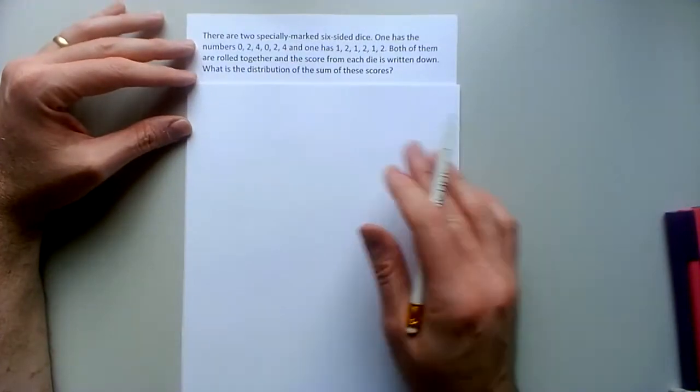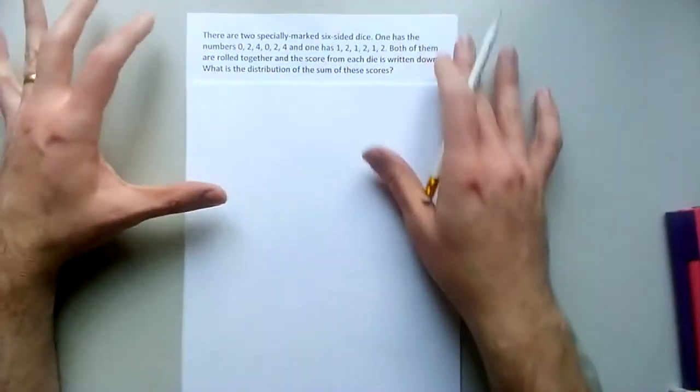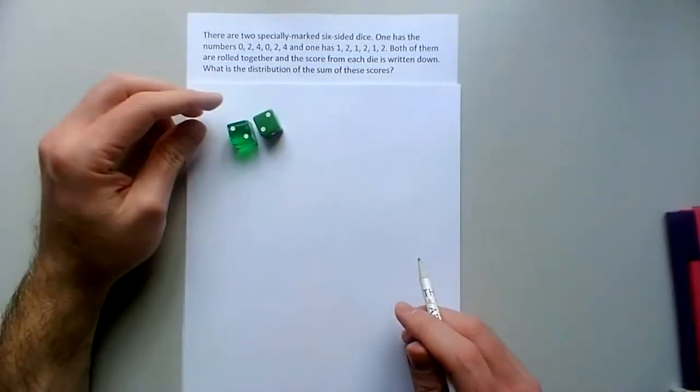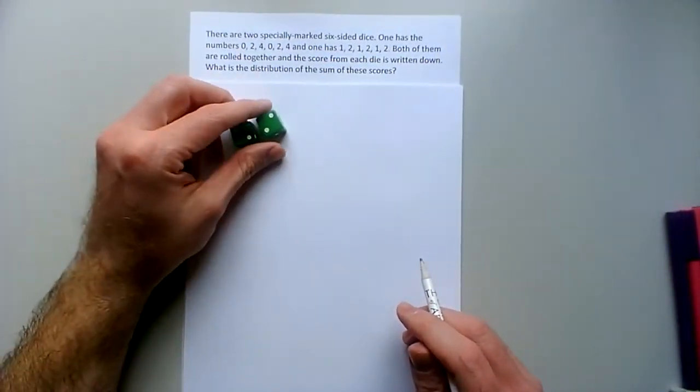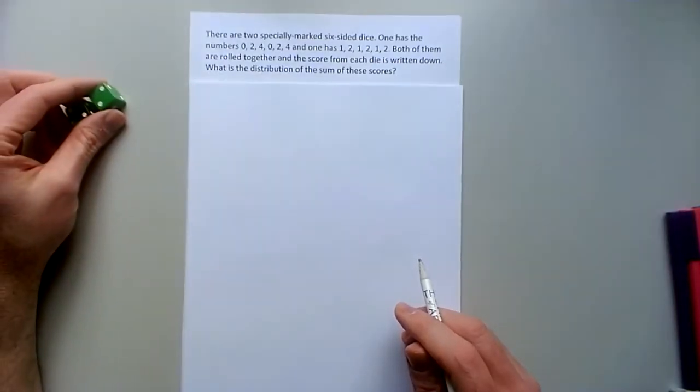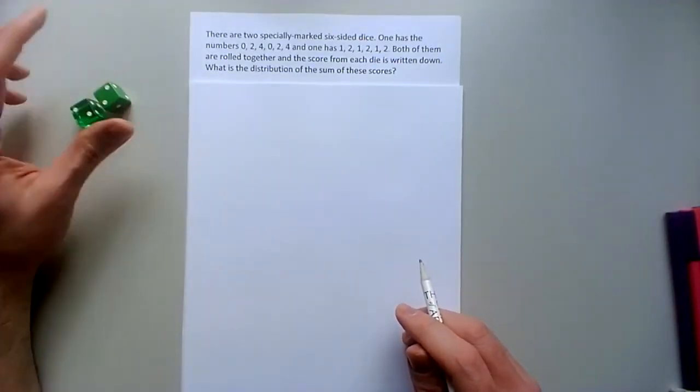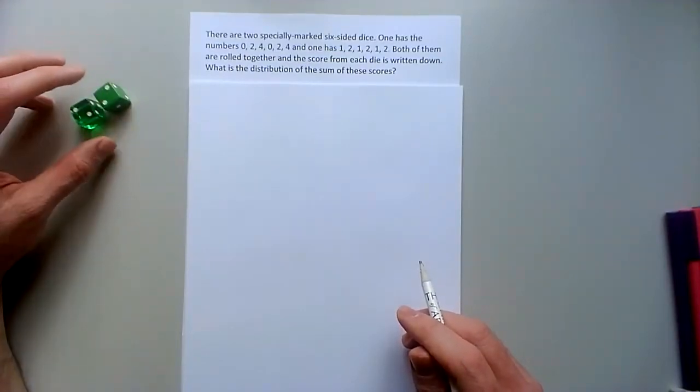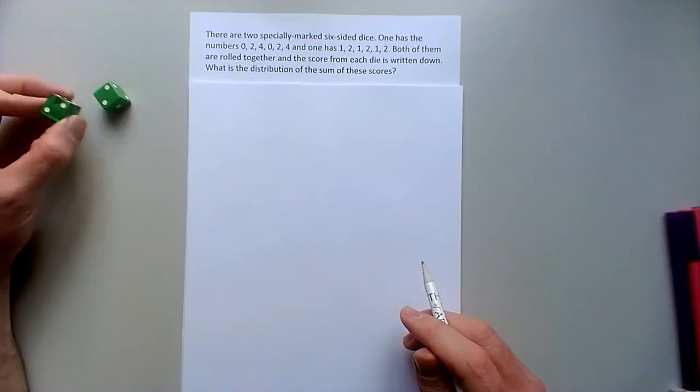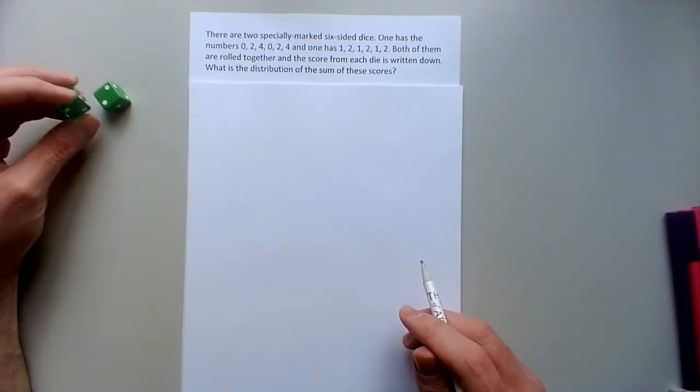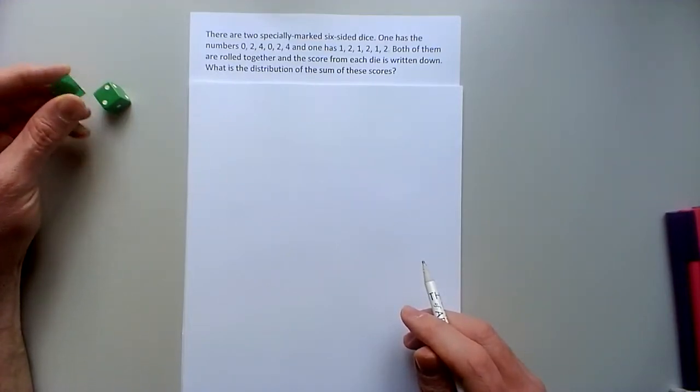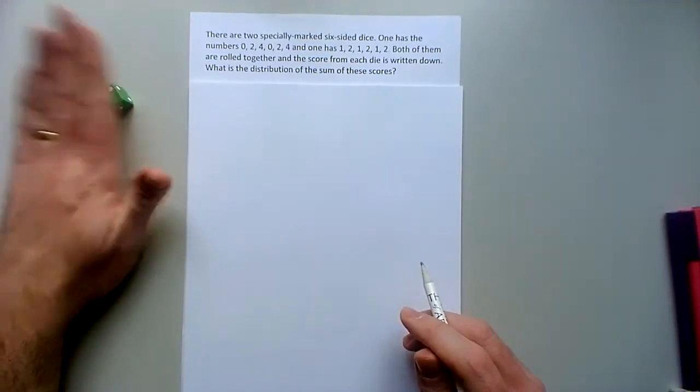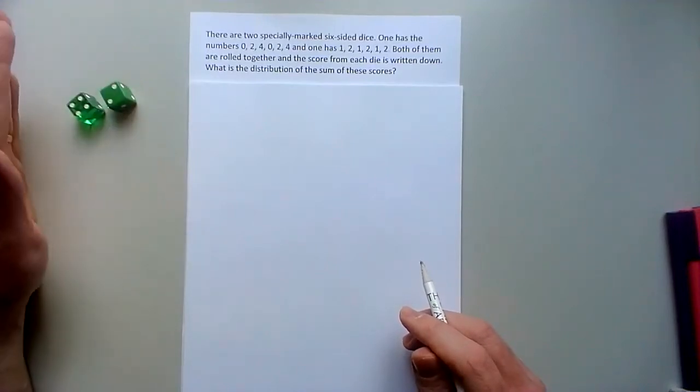So okay, well the sample space is the rolls of pairs of dice. Now you roll the two dice and you get an answer and all of those pairs have two options for what these things are. And so what's on one die, the one that's 0, 2, 4, 0, 2, 4 and what's on the other die, they're two random variables that both describe this situation and we're going to have to combine them together by adding them.